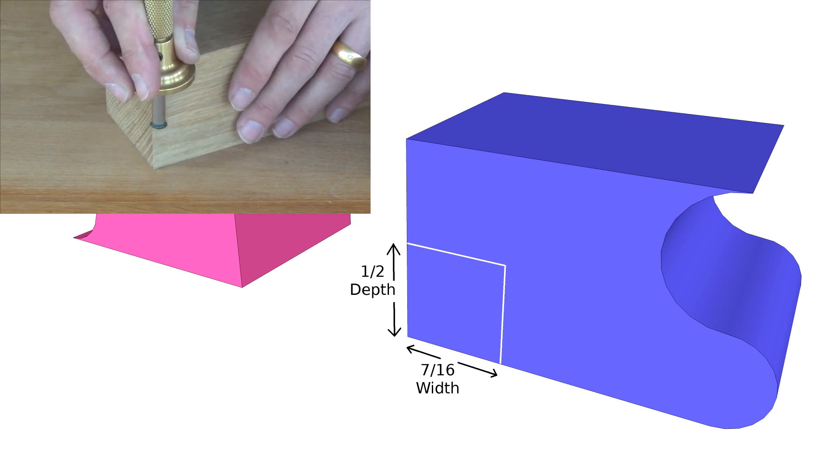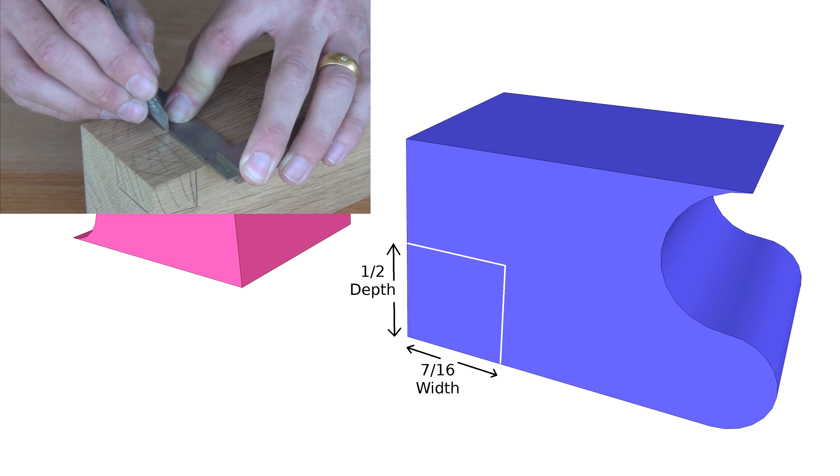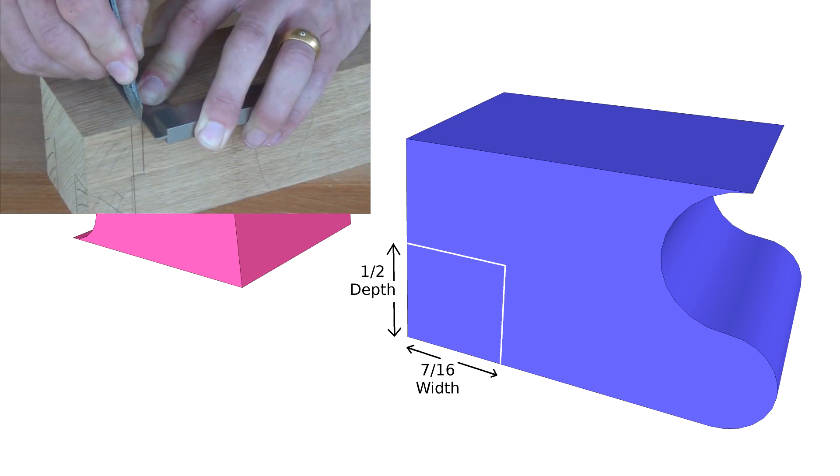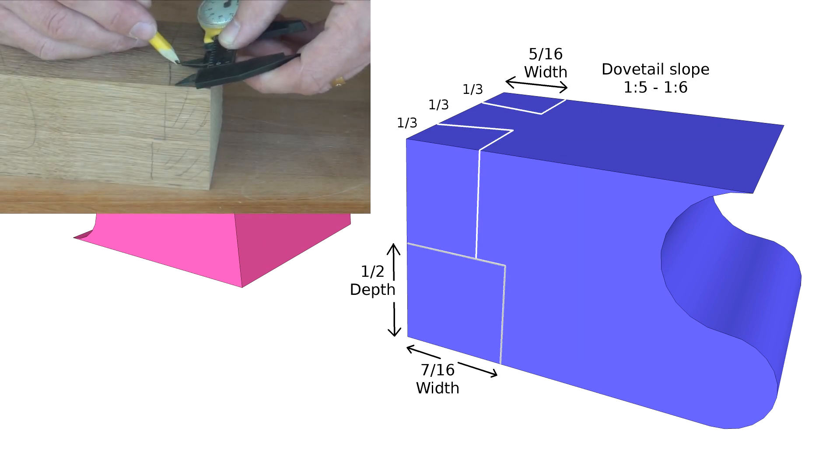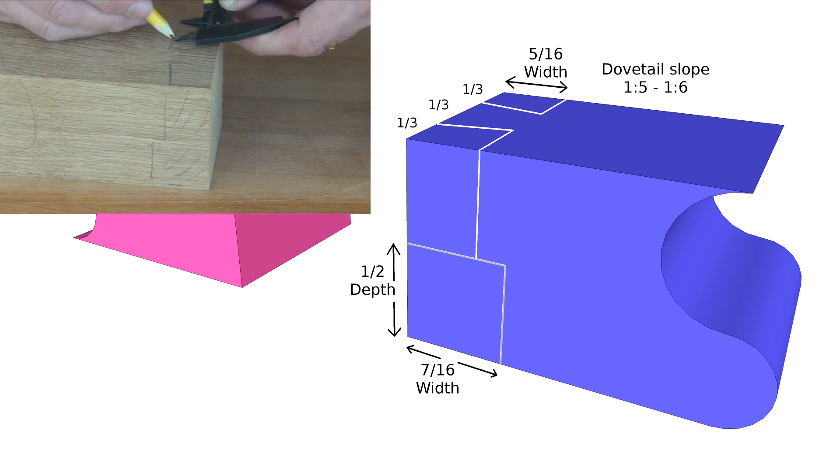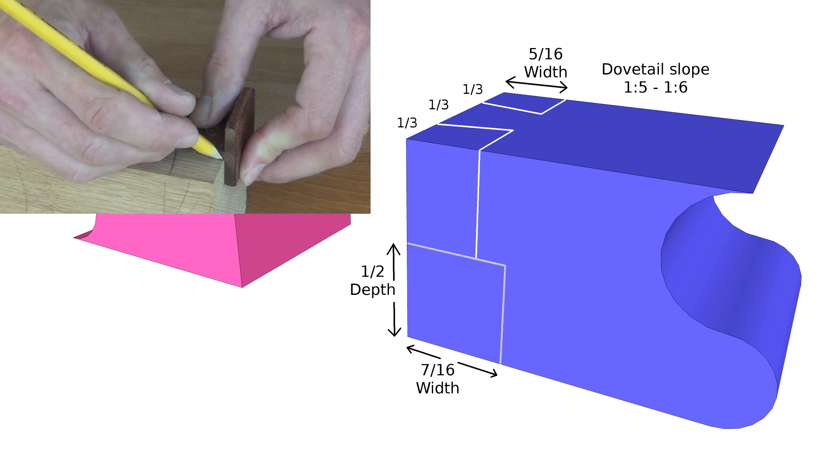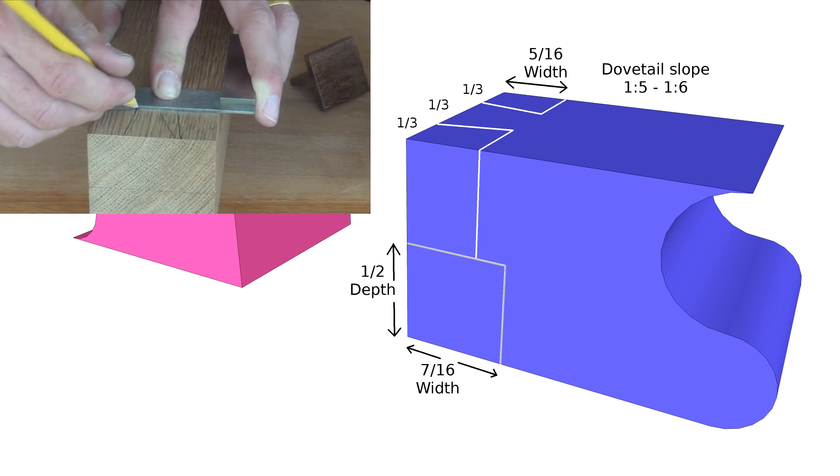A rebate is made in the bottom of the male part, half depth and about seven sixteenths in width. The dovetail itself is made approximately a third of the width and marked into a shoulder line at five sixteenths of the width. Dovetail slope being between about one to five to one to six.